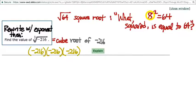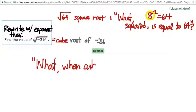So, how does this change our thinking about the cube root of negative 216? It's not that we're multiplying negative 216 by itself three times. It's, in fact, the opposite. It's asking, what, when cubed, equals negative 216? That's a question mark. There we go.